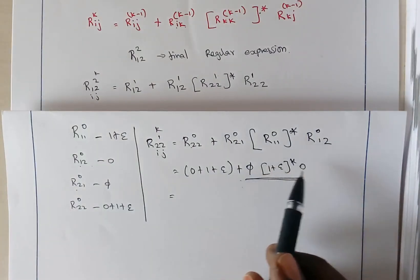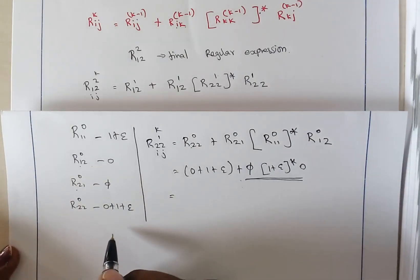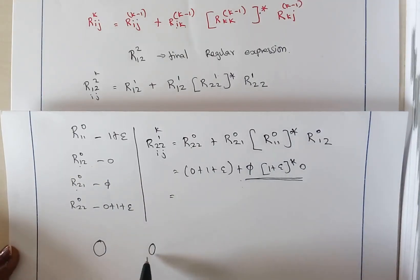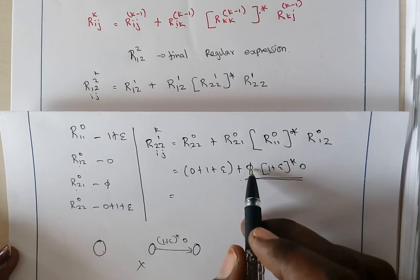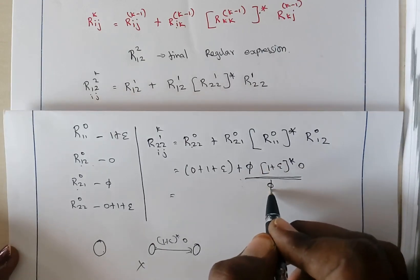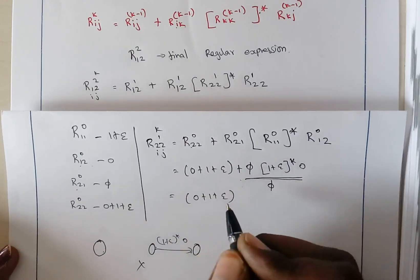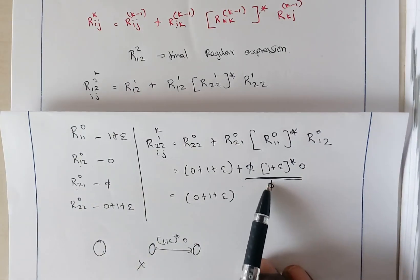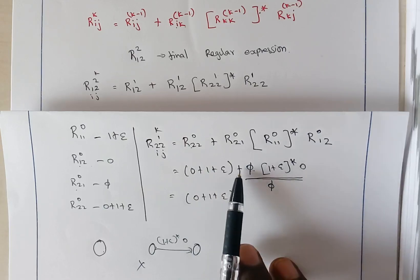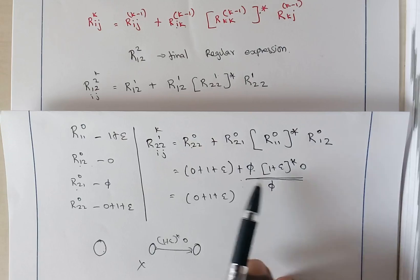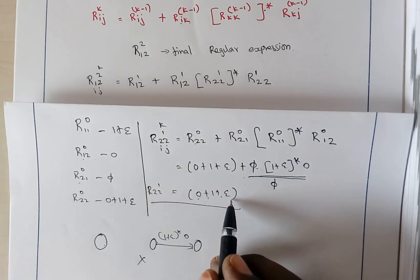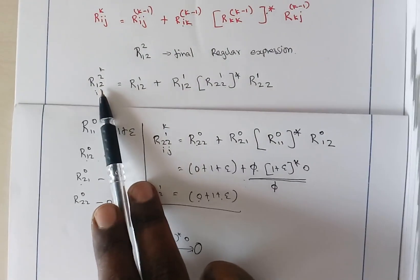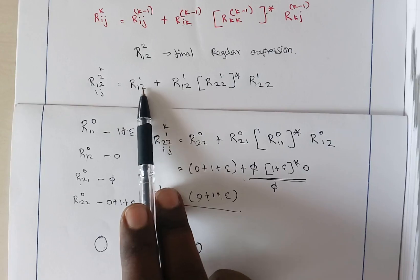When a null path is concatenated with something, the result is null. And null combined with a parallel edge — the plus symbol — means we can eliminate the null and keep only the remaining value. So for R22 of 1, the null part drops out and we are left with just epsilon plus 0 plus 1.